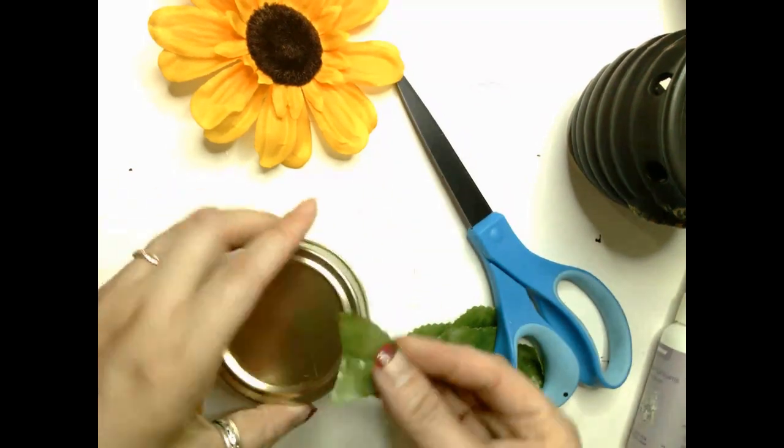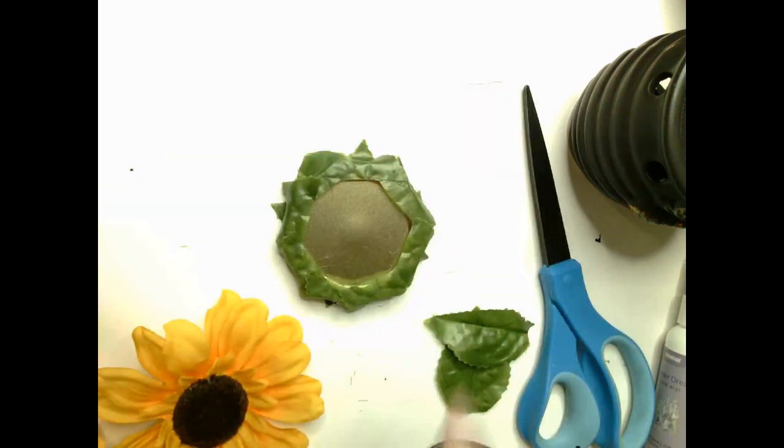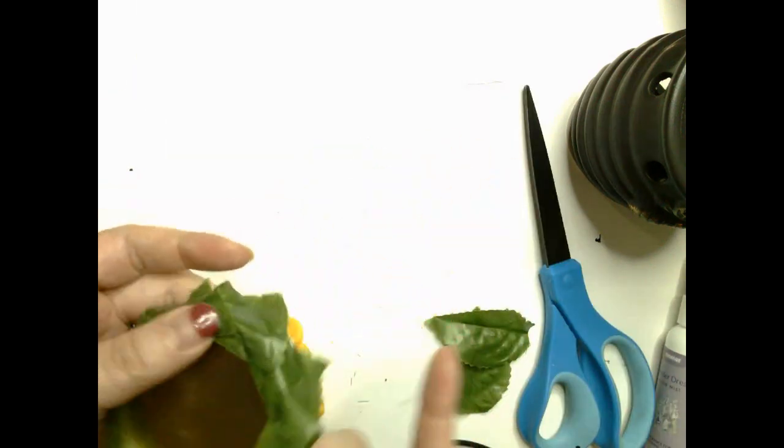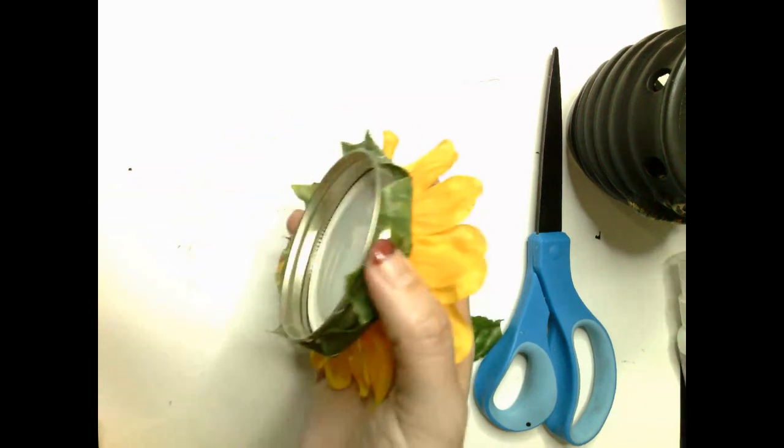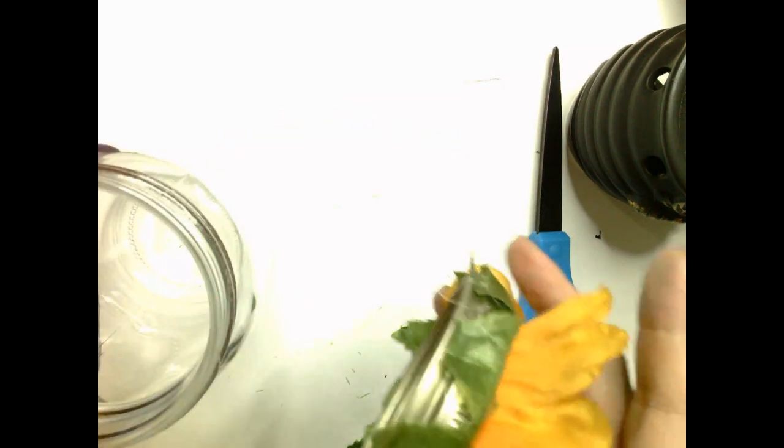Then I'm pulling off a sunflower and cutting off the remaining stem. Then I decided to go ahead and glue the back end petals down to the lid as well to help cover up the metal part of the lid.